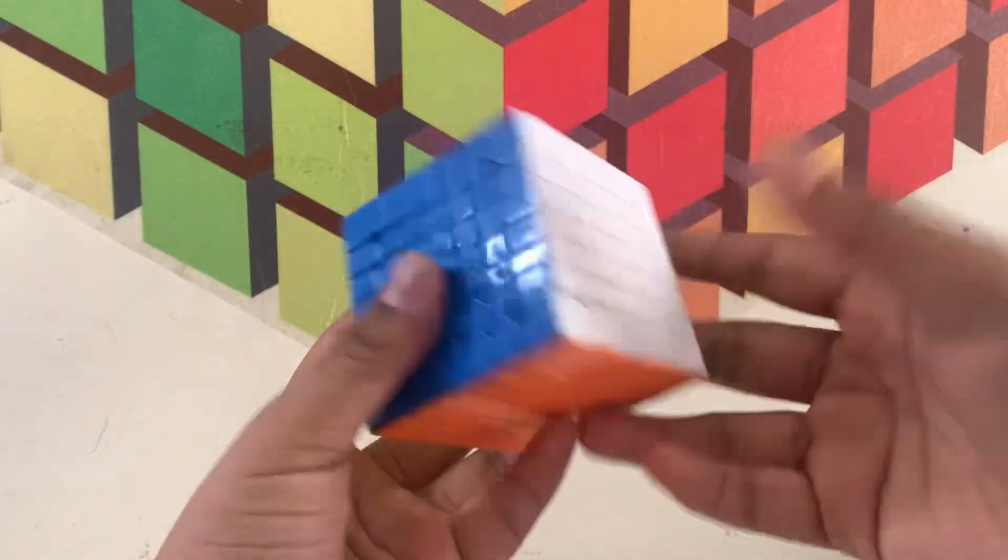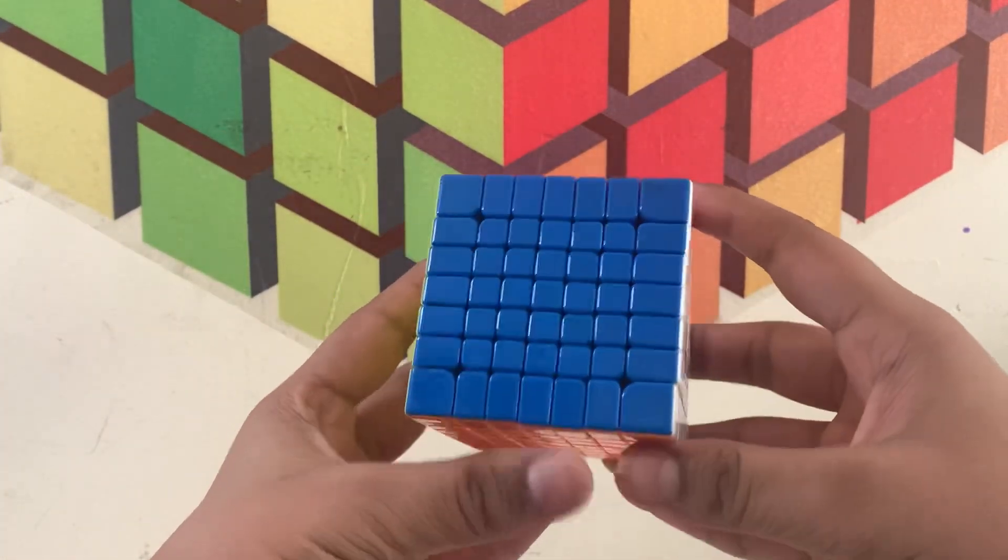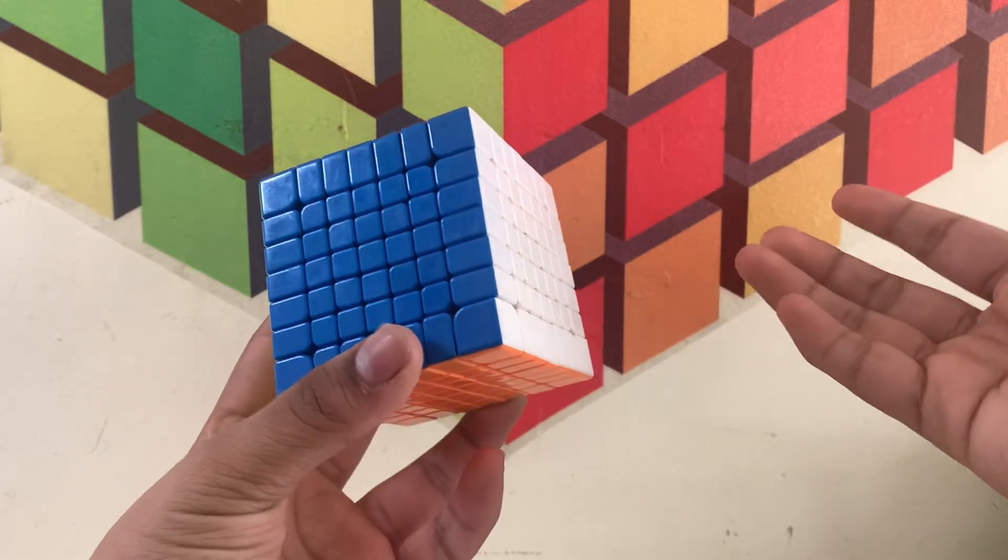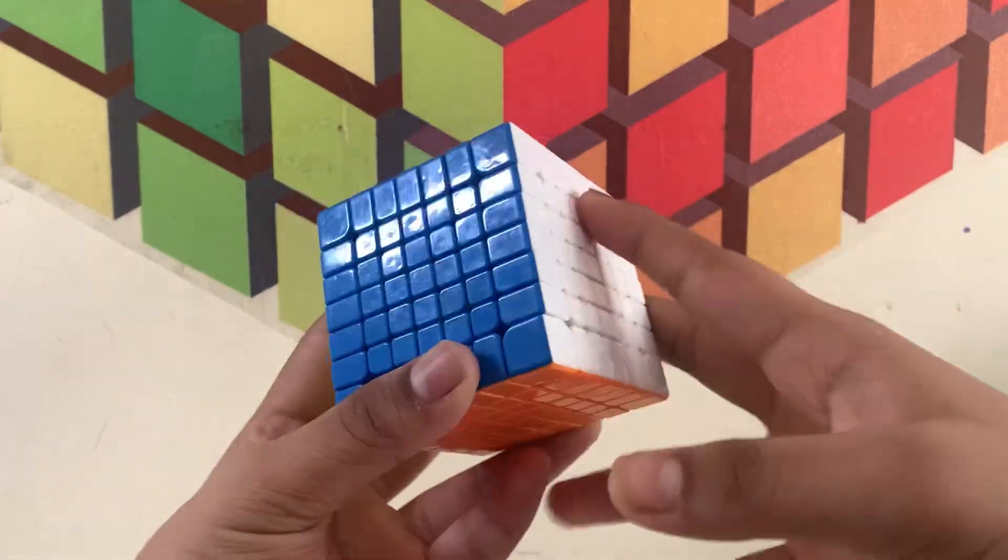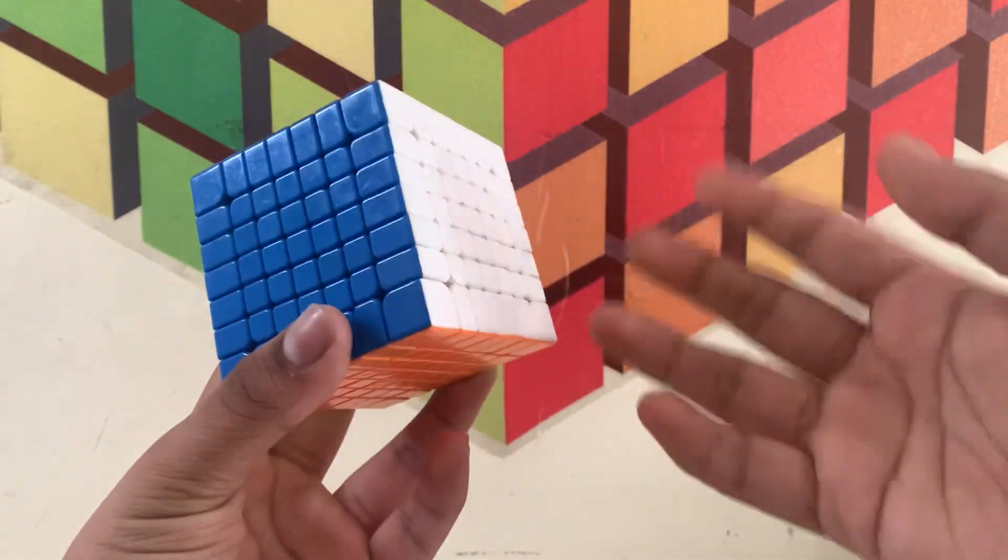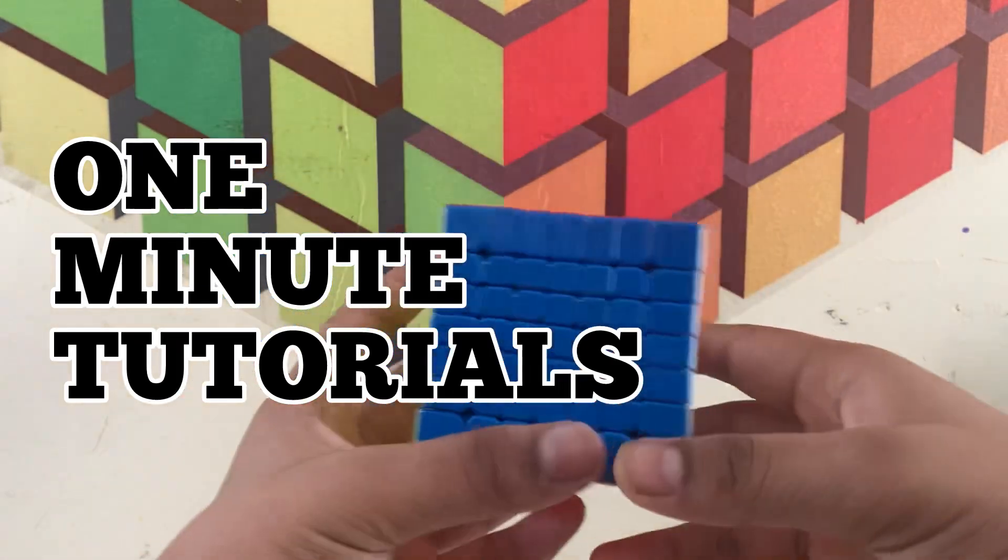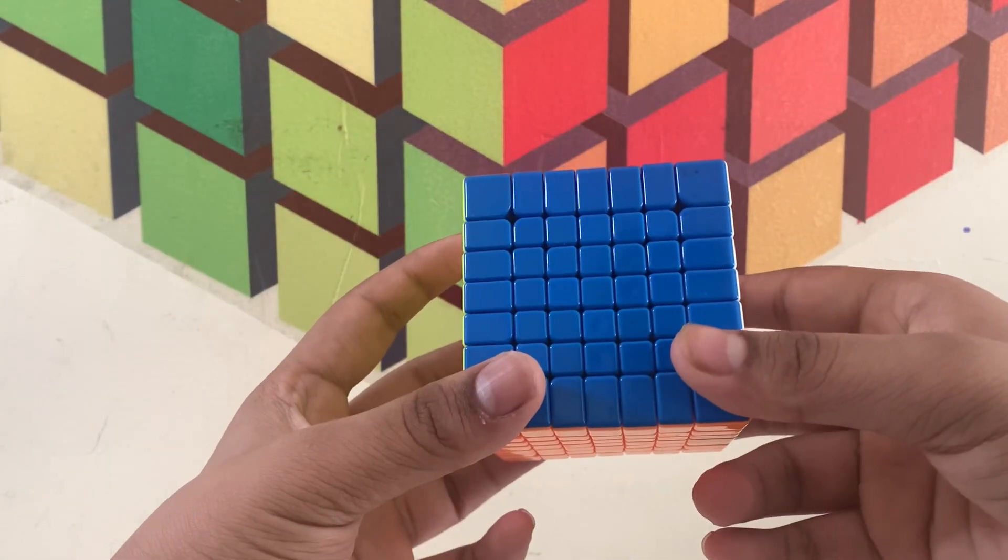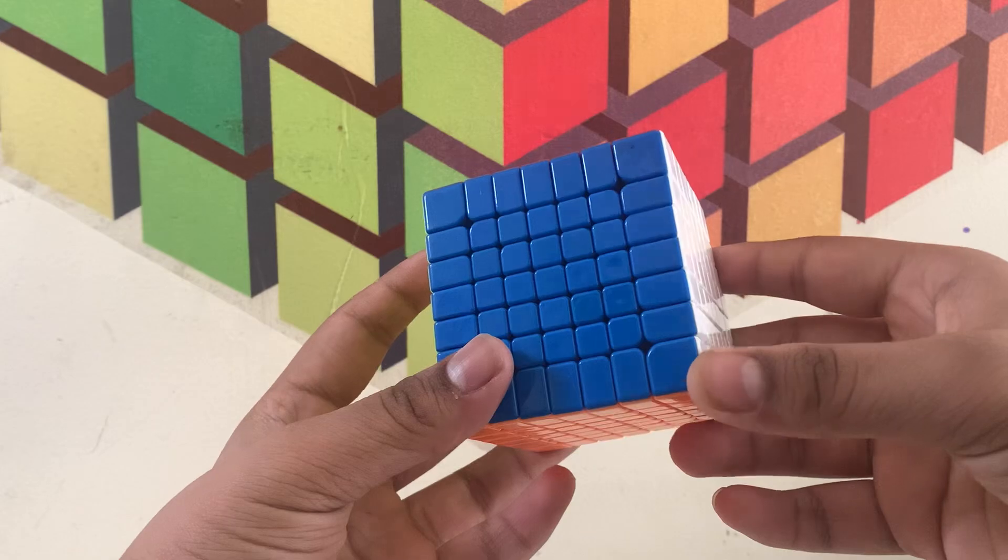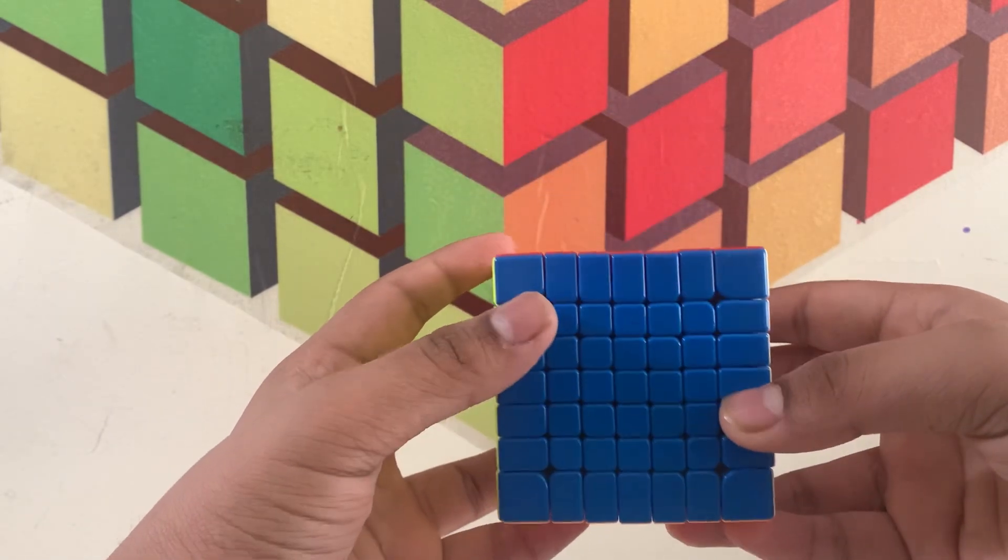Hello everyone, and this video is a continuation to my series One Minute Tutorial. Let's get started. In this video I'm going to show you how to make the letter G on a 7x7 Rubik's cube.